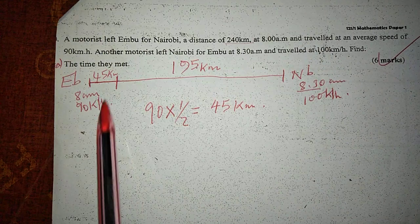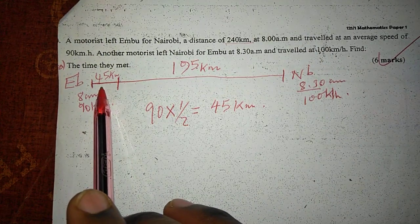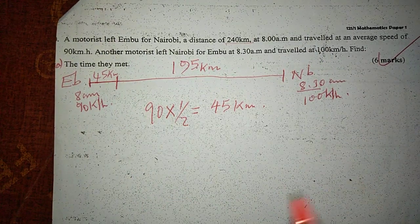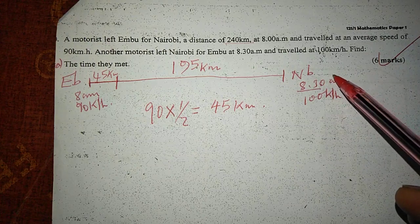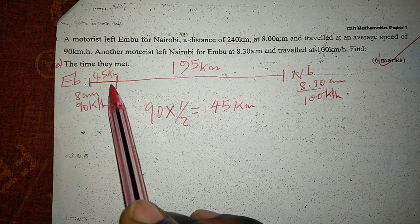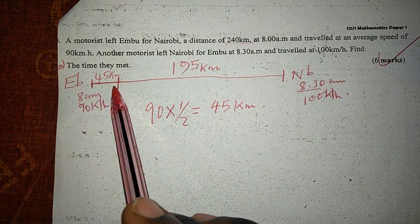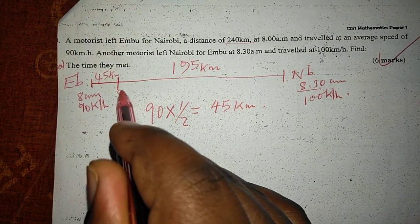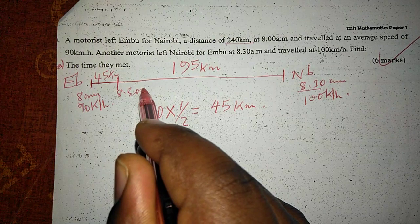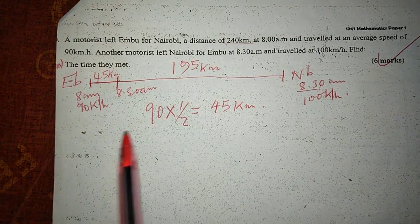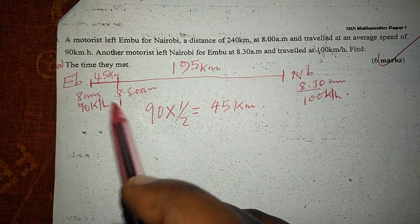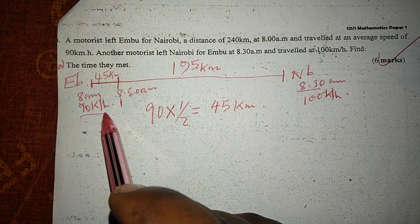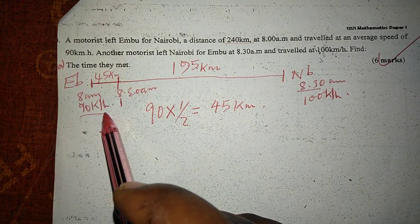The total distance was originally 240 kilometers. The first motorist has already covered 45 kilometers before the other one started. So by 8:30 a.m., when the second motorist is starting his journey, the first motorist is partway along the route, still traveling at a speed of 90 kilometers per hour.